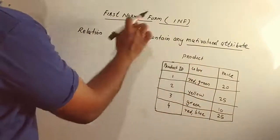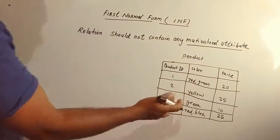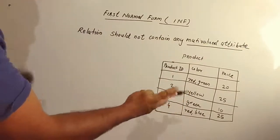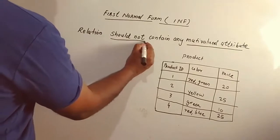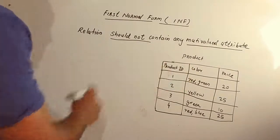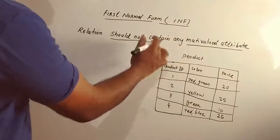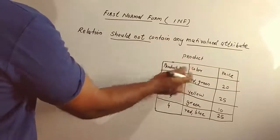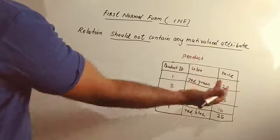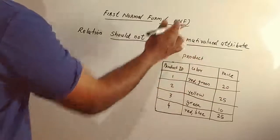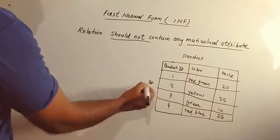This is the first normal form. A table should not contain multi-valued attributes. If you have a multi-valued attribute in the table, that violates 1NF. If you also have a multi-valued attribute, how does it translate for the first normal form?